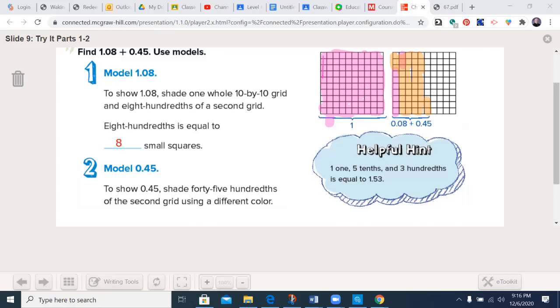So now I have shaded it as a different color. And you can view that I have one whole one. Now one, two, three, four, five columns of tenths. So it's 1.5 and then there's three hundredths. Three. It's 1.53. And that's where our helpful hand here was alluding to.